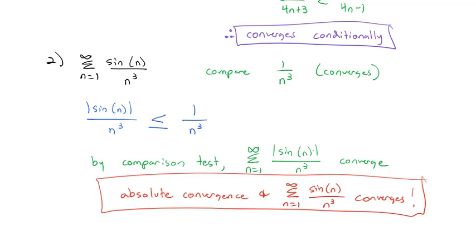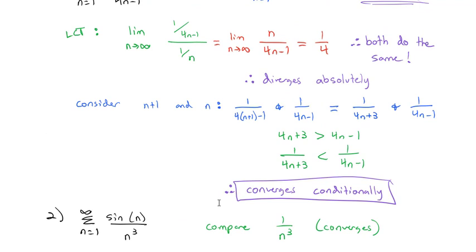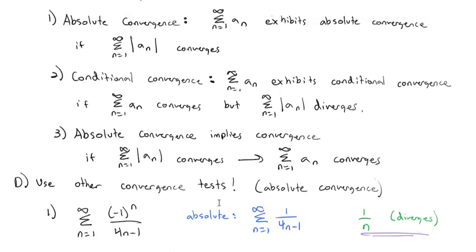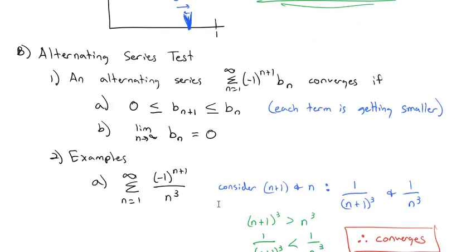So, if we can prove the absolute value converges — using the integral test, comparison test, limit comparison test, or another test — then we have absolute convergence and the alternating series converges. If the absolute value diverges, then we check for conditional convergence by using the alternating series test. That's how we work with alternating series. Series take lots of practice to get comfortable with, so practice, practice, practice, and come to class with questions.